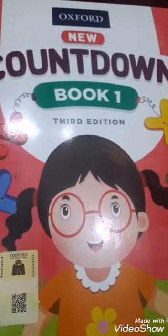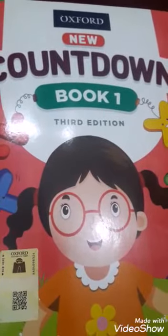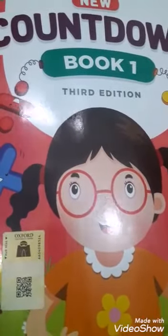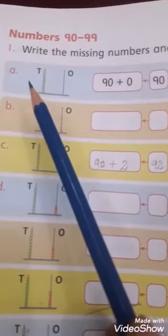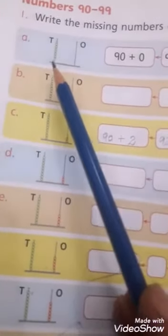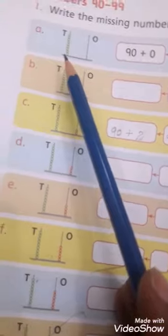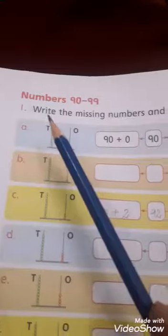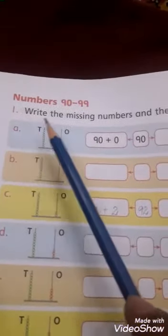Assalamu alaikum students, I am your maths teacher Miss Sufya. I hope you all are fine. Today we will do page number 36. In previous lectures I told you about the abacus. It has two rods. The rod on the left is for tens, the other rod on the right is for ones.